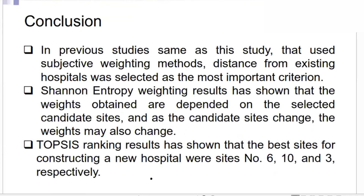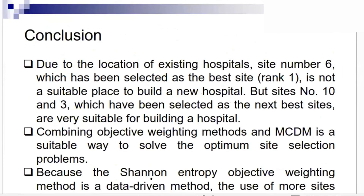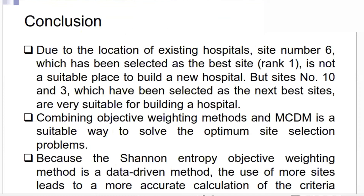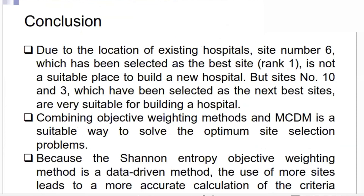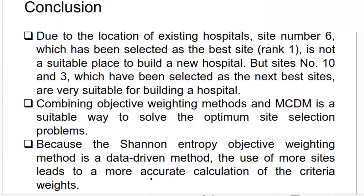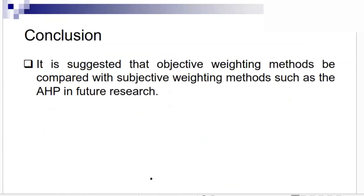TOPSIS has shown us that sites number 6, 10, and 3 are most suitable for this study. Due to the location of existing hospitals, we ranked the different alternatives and site number 3 was one of the sites considered. Combining the objective function methods and multi-criteria provides a good solution for optimum site selection. Shannon theory, although a data-driven method, provided us the opportunity to have more accurate results compared to previous research.